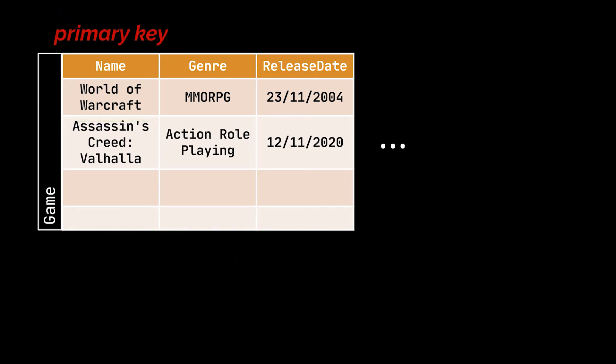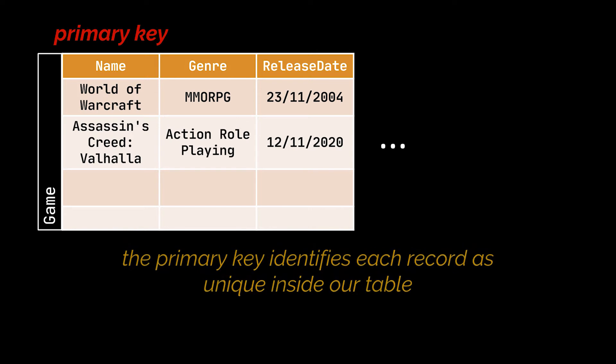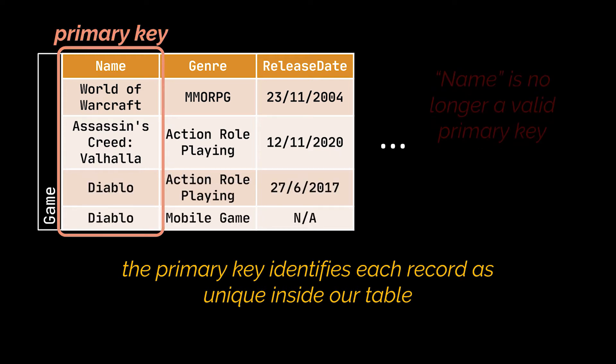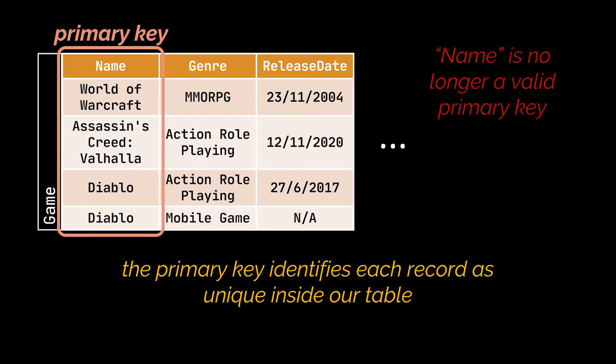Almost all tables created in a database require a primary key. This key is used to identify and make each record unique inside our table. In our example, we can set the game title to be our primary key, as we most probably won't encounter scenarios where we have two games with the same title.